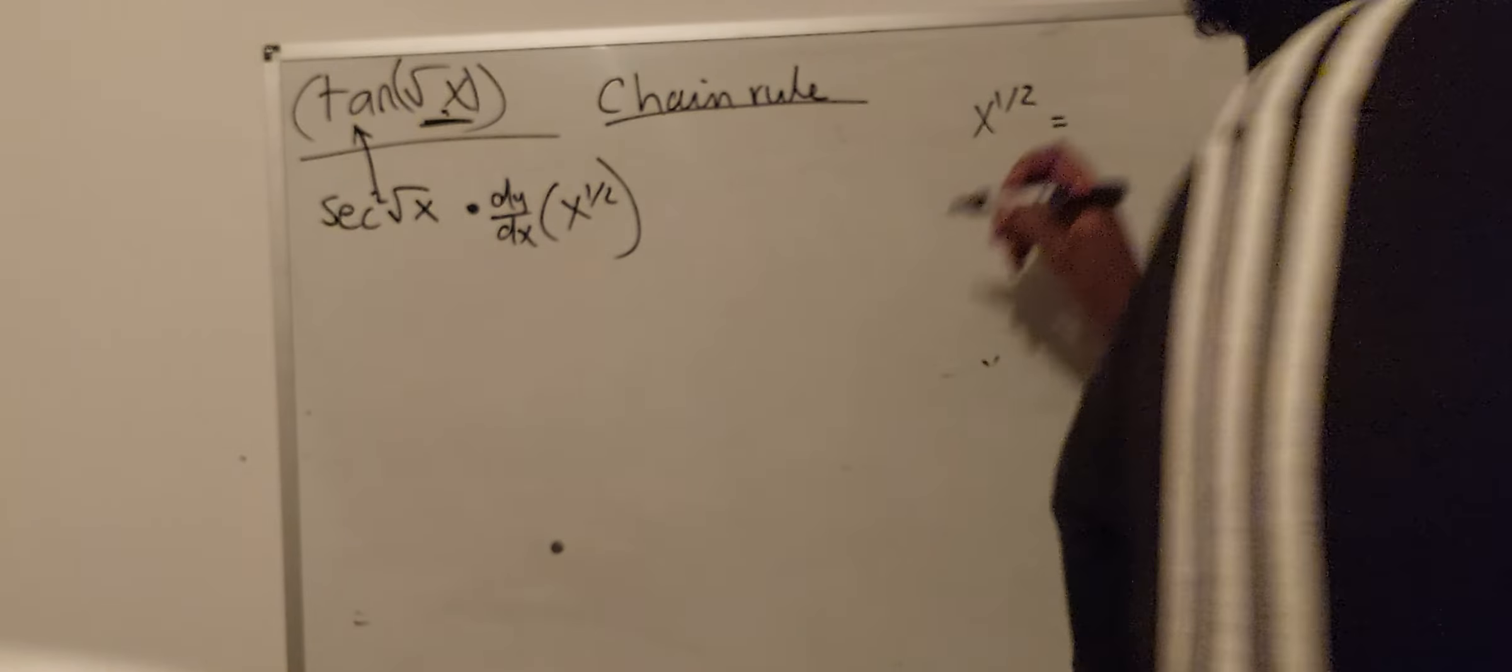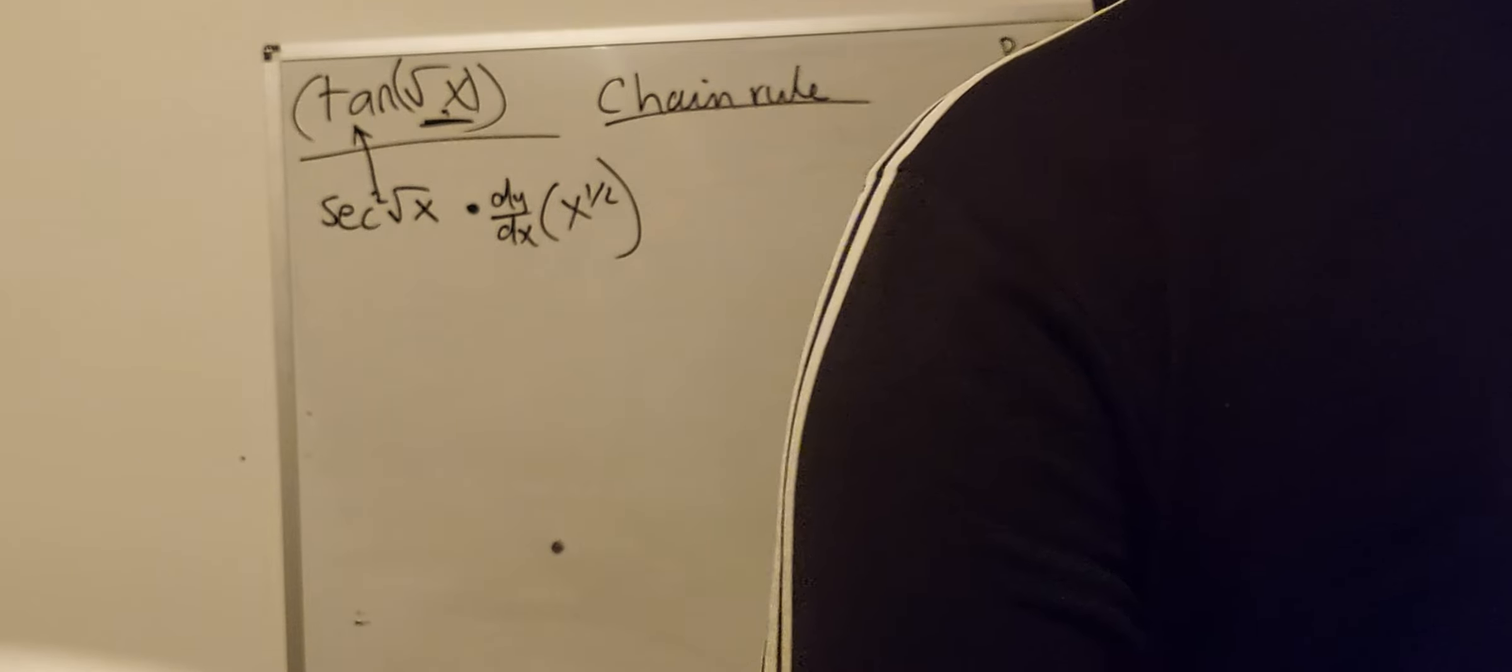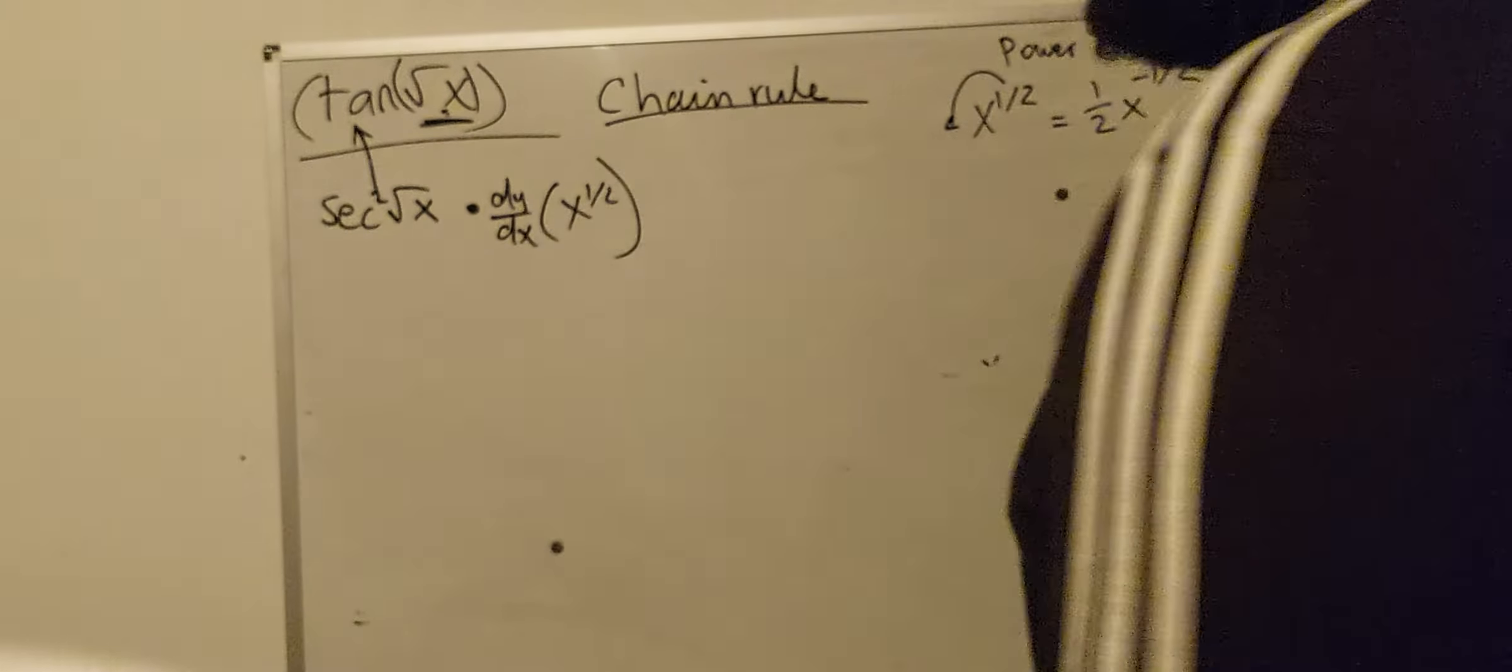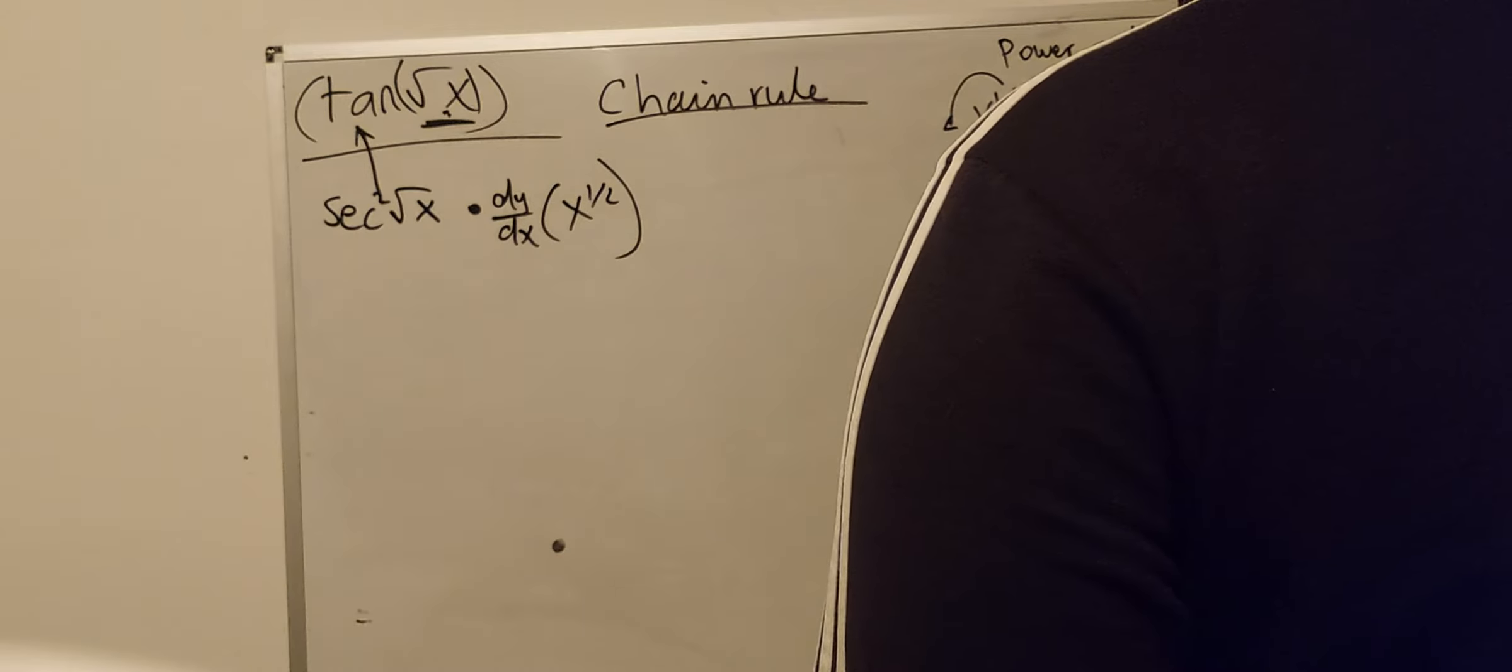Well, we're going to use something called the power rule. So you bring the power to the front of the x. So it's going to be half x to the power of minus a half. Minus a half is because you do a half minus one.